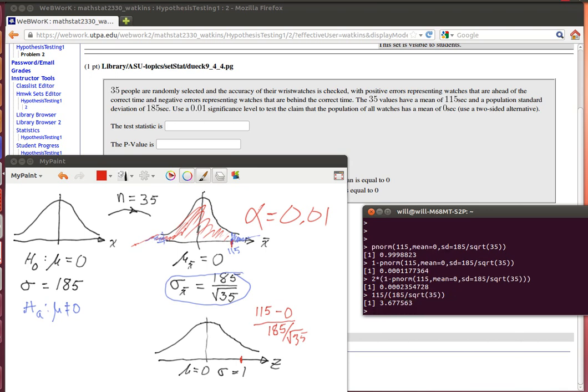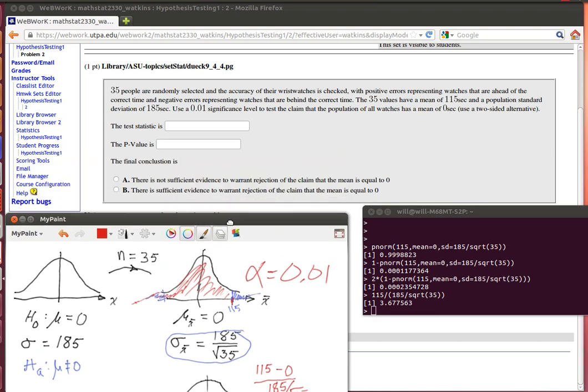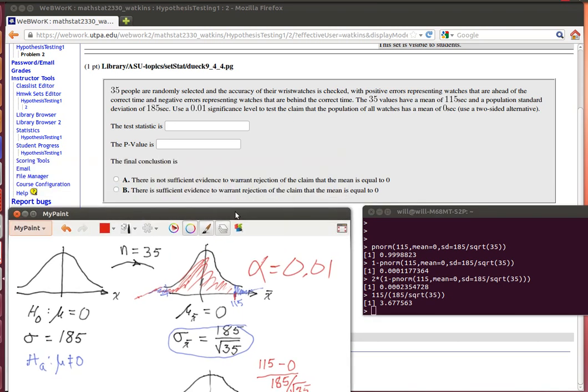So there's the test statistic, and we've calculated the p-value already. We notice that there is sufficient evidence to warrant the rejection of the null hypothesis because the p-value is low, so the null hypothesis must go.